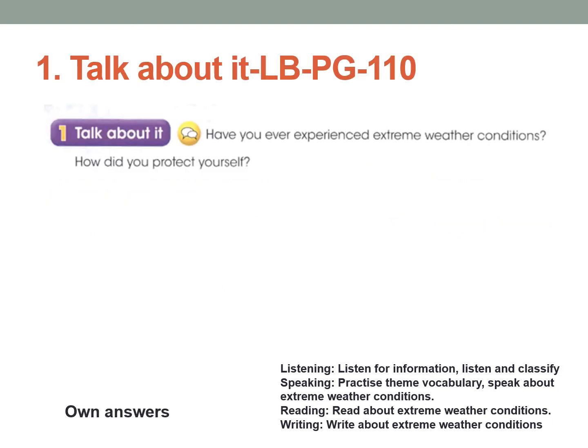Now take out your book. Activity 1: Talk about it. Learner's book page number 110. Have you experienced an extreme weather condition in your life? Did you experience very heavy rainfall? Did you experience strong winds, like a tornado, floods, anything like that? How did you protect yourself at that time? You can record a video and send it on the class, please.